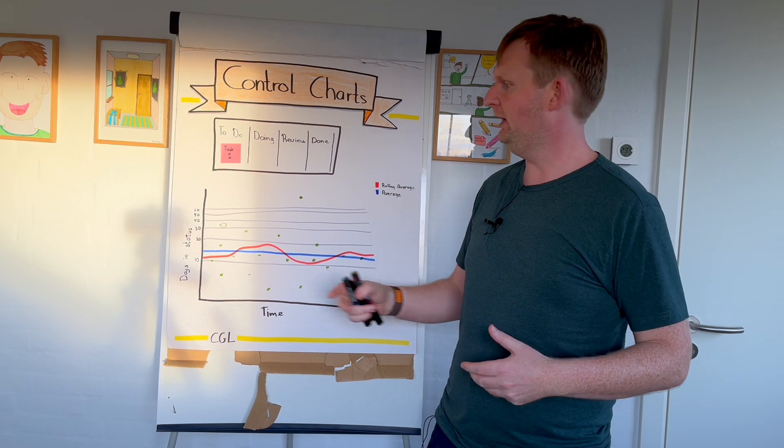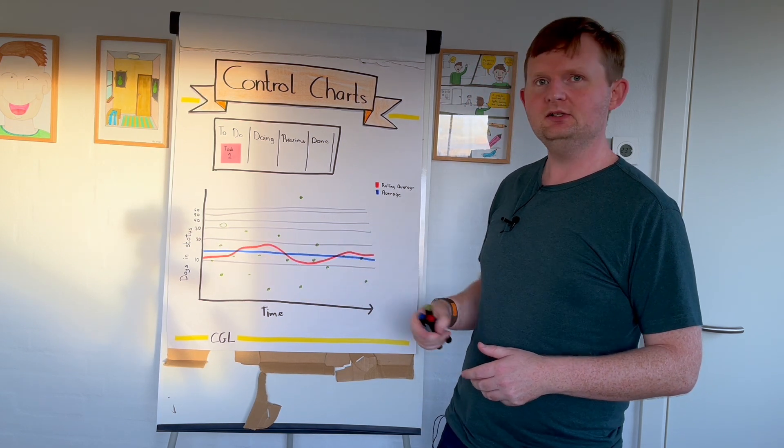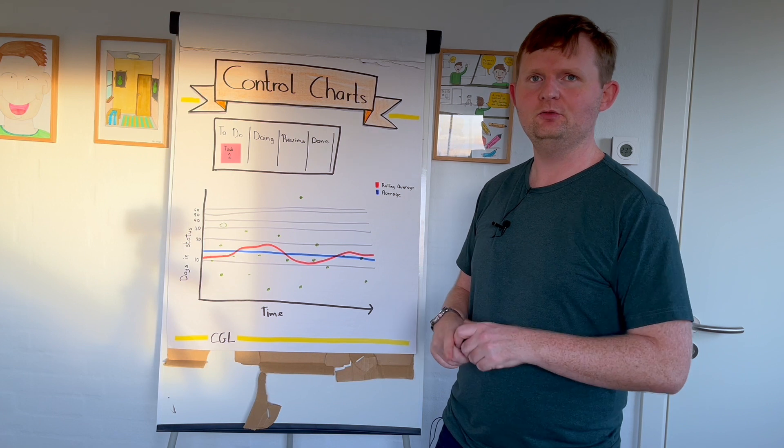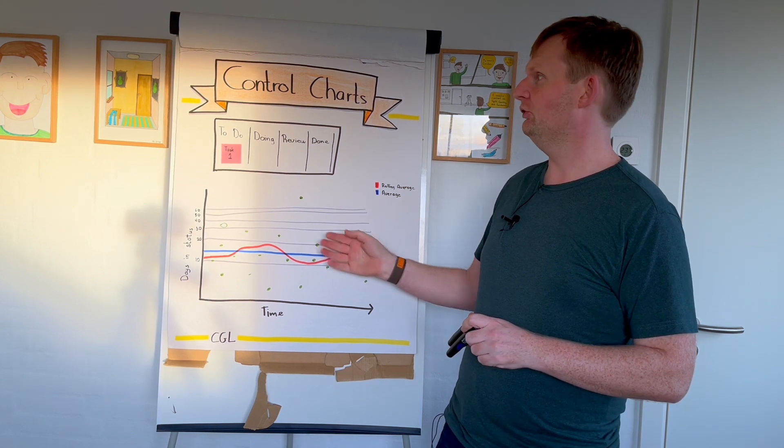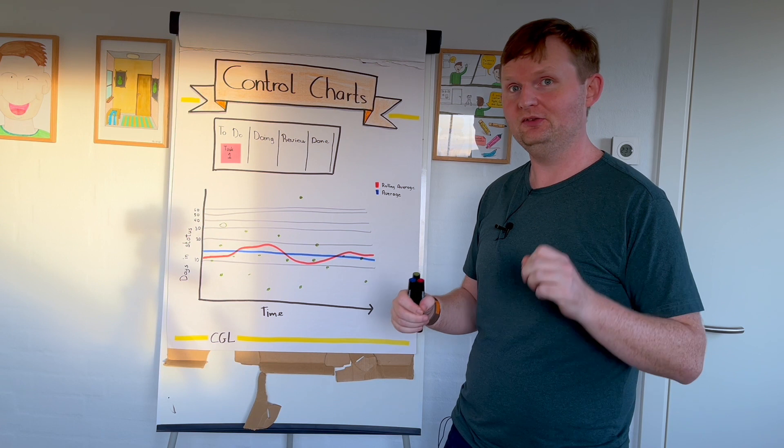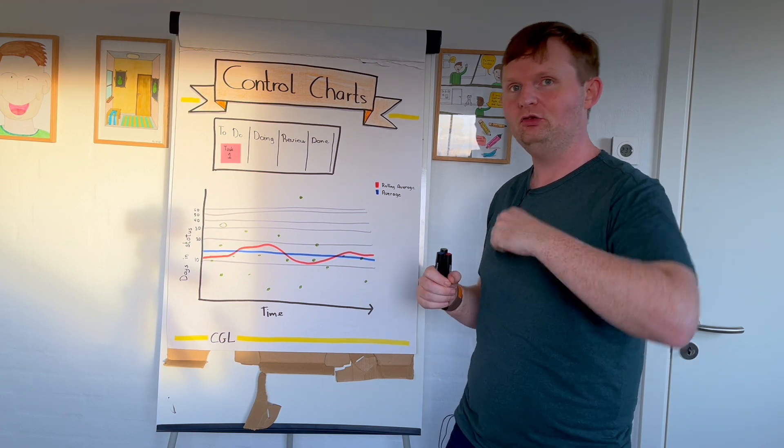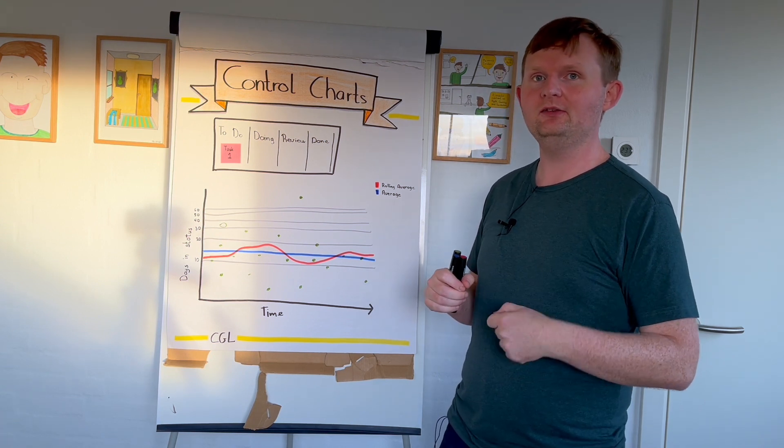Again, depending on how much spread do we have in our data set—if we are pretty good at creating uniform size backlog items, these should be somewhat identical, right—and that again just heightens our predictability. And this control chart is just, it's really a tool that just keeps on giving when you start to break it down into more uniform tasks and so on.